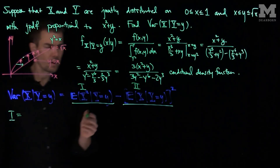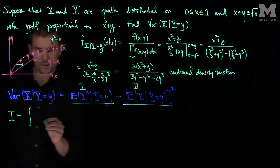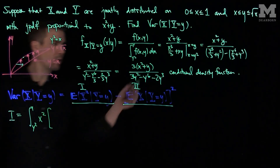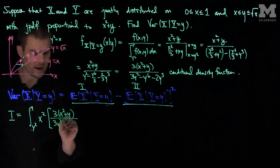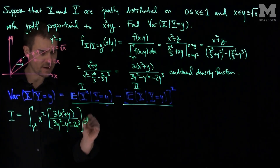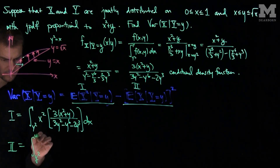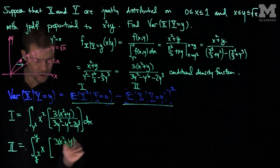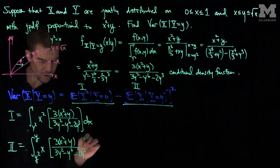Term (1) is the integral from y squared to y of x squared times the conditional density function, which is 3(x squared plus y) over (3y squared minus y to the sixth minus 2y cubed), dx. Term (2) is the same form: the integral from y squared to y of x times 3(x squared plus y) over (3y squared minus y to the sixth minus 2y cubed), dx.